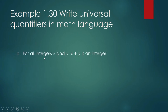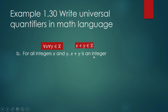Example (b): For all integers x and y, x plus y is an integer. 'For all' indicates a universal quantifier. We write: for all x and y that are integers, the sum x plus y is also an integer. In math sentence form, that is how you put it.